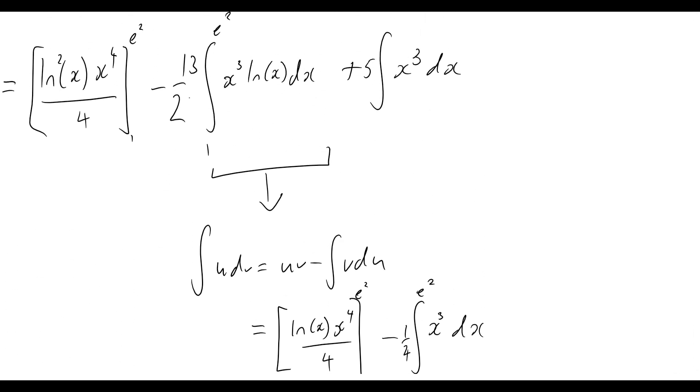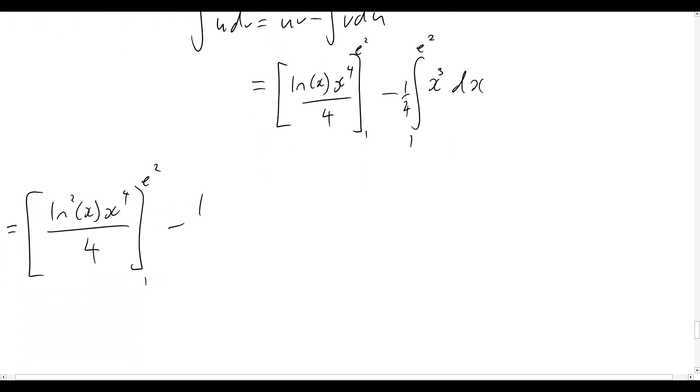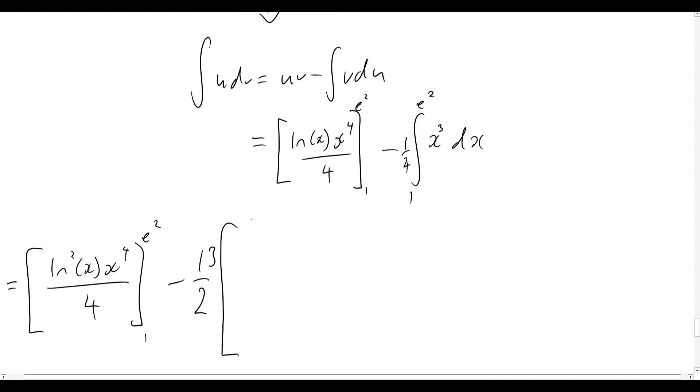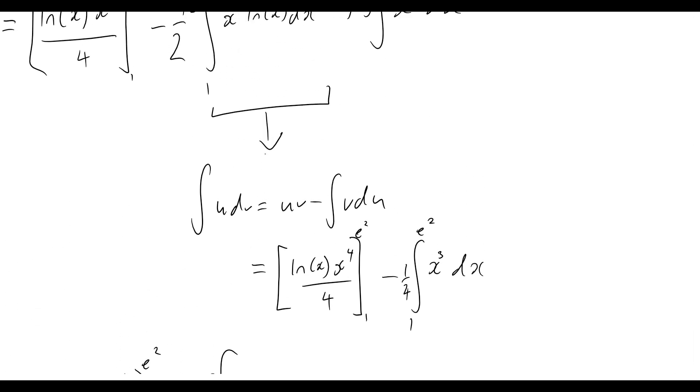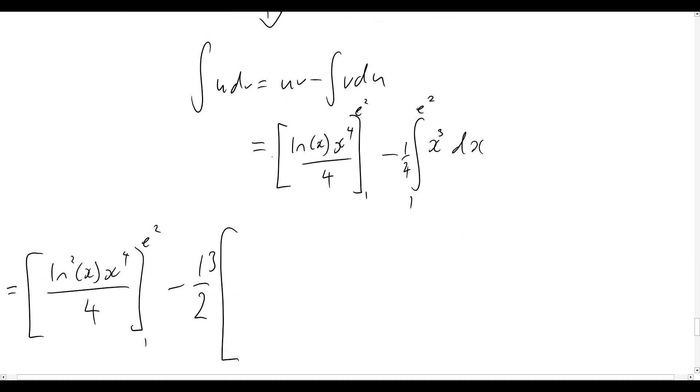So next we had minus 13 on 2. Now put in big brackets over here. We'll then include, instead of writing x cubed natural log of x dx, we'll then just put in exactly what we found this to be equal to. So this whole section down here, we'll then have that natural log of x times x to the 4 over 4 evaluated from 1 to e squared.